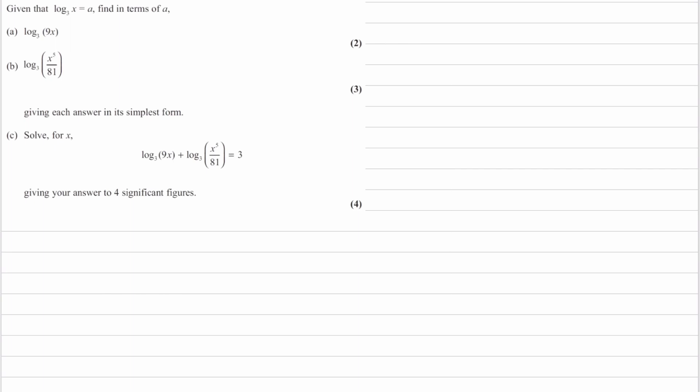So for part A, and for part B actually, the hint for these two parts would be to use the different log rules to try and break those two things apart. So split apart log to the base 3 of 9x, split this apart as well, and then hopefully you should be able to see a way in which to bring this in to what you have then got.